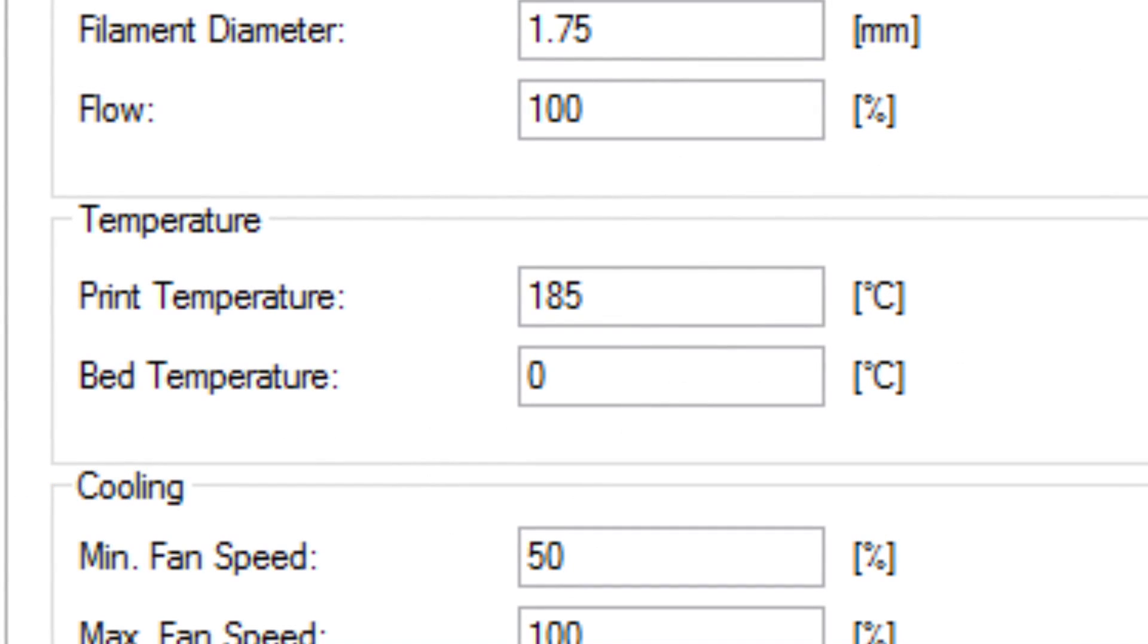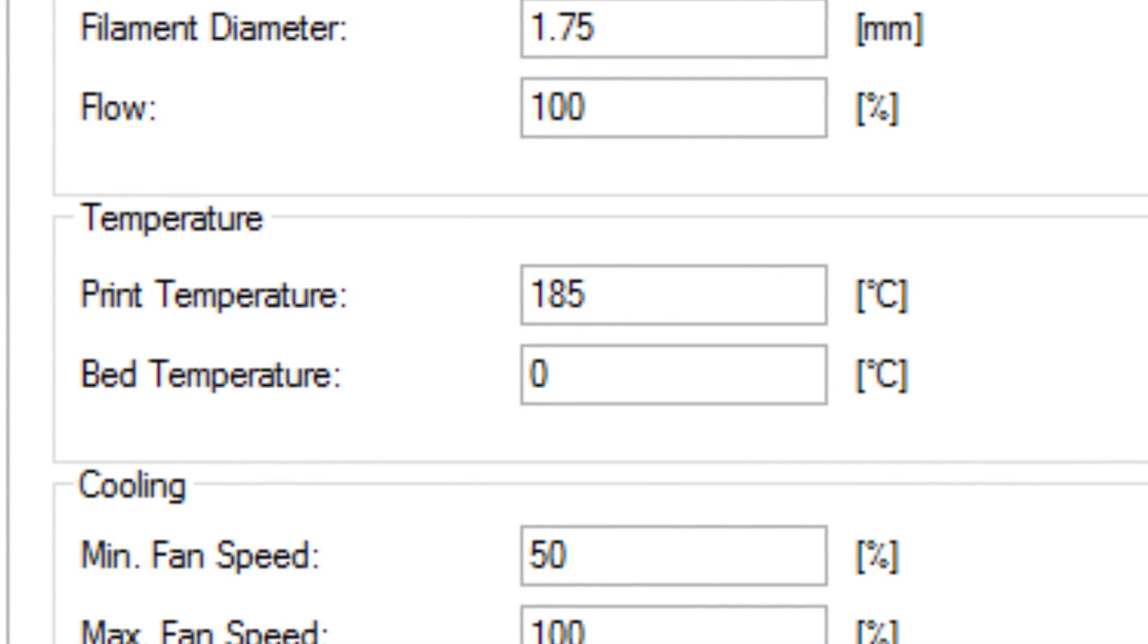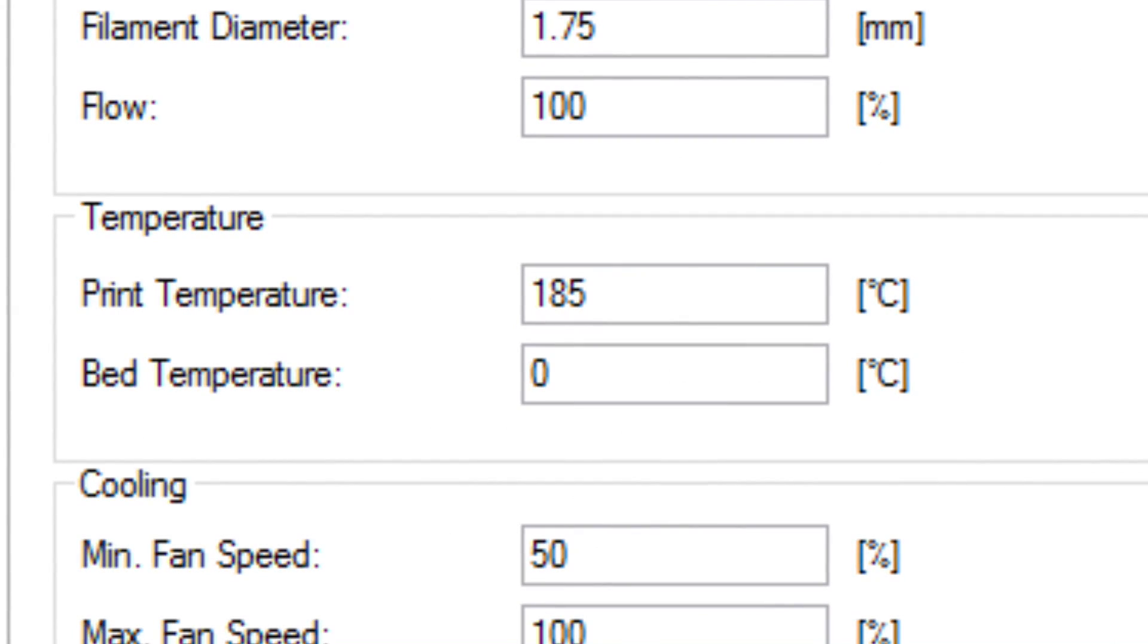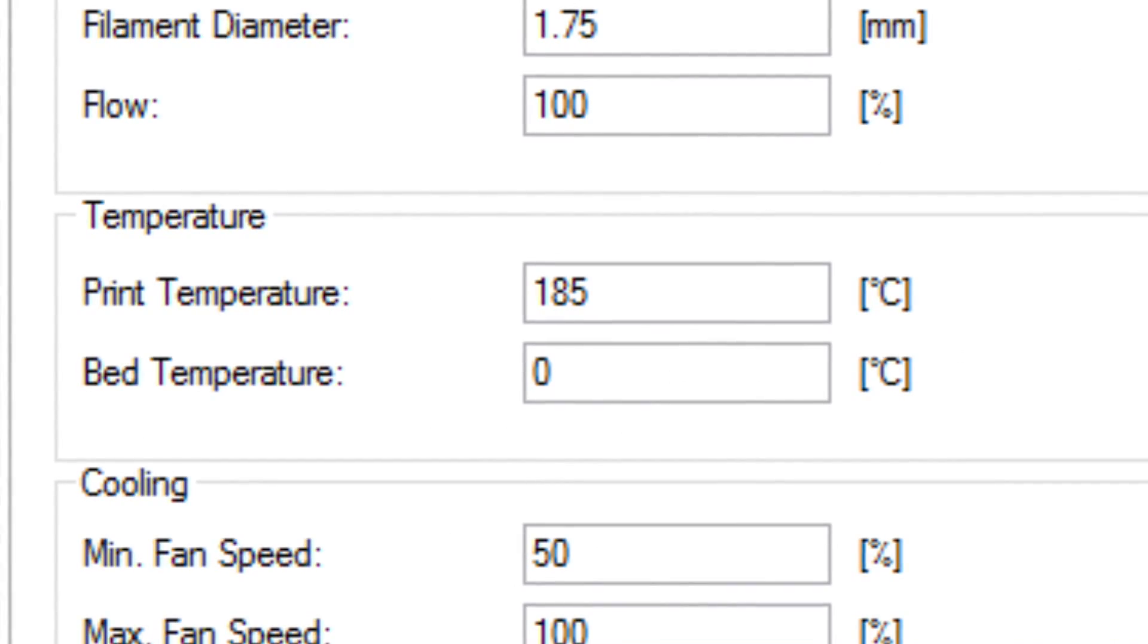And all that setting really does is set the print temperature at 185 degrees Celsius and a zero degree bed temperature, because this is PLA. I don't need the heated bed. So then I sent it to the printer to print it in wood.